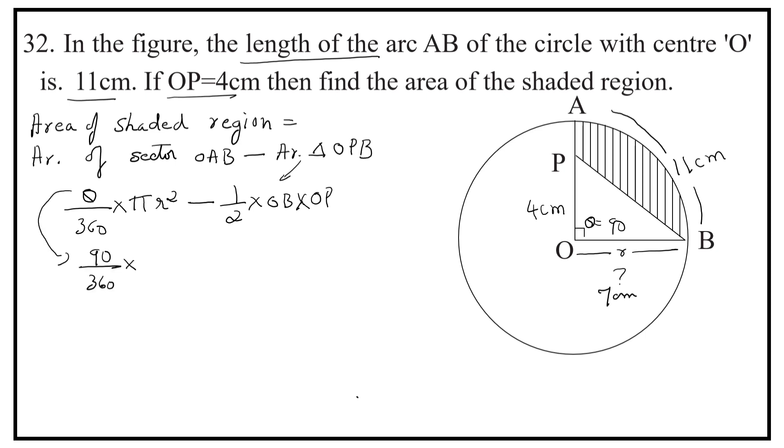90 by 360 into 22 by 7 into 7 into 7 minus 1.5 into 7 into 4. OB is 7 here. So, here 7 and 7 get cancelled.